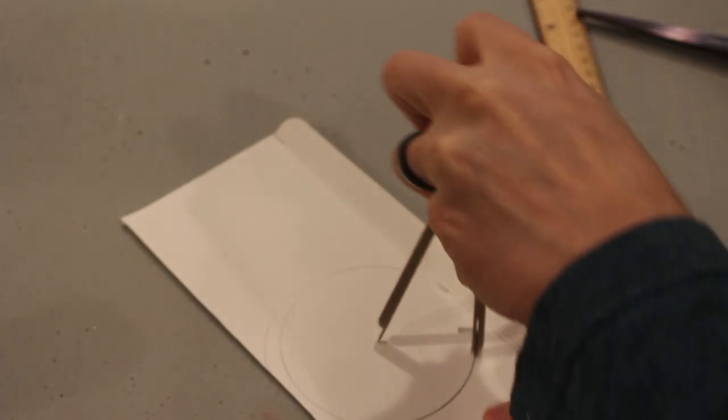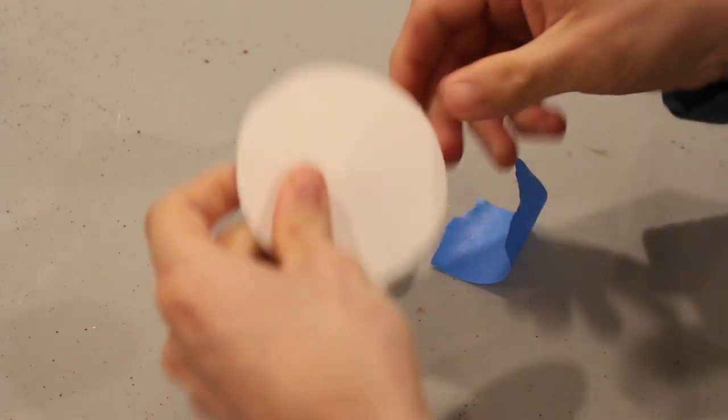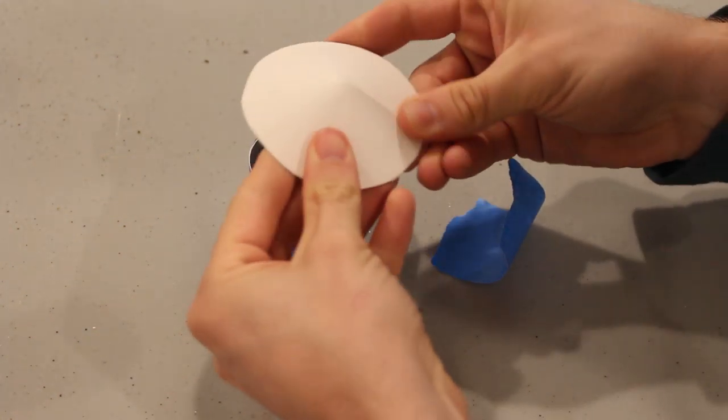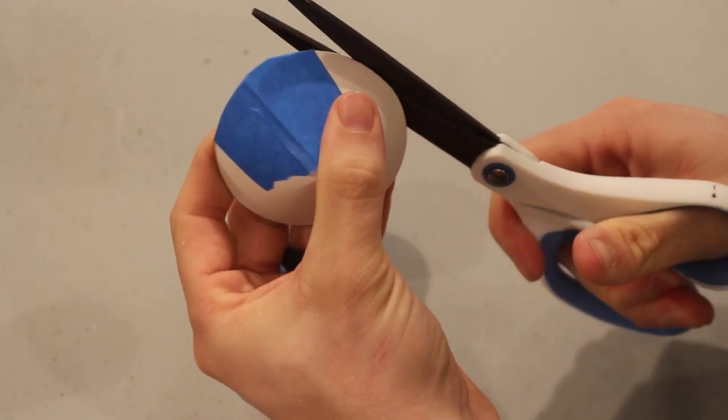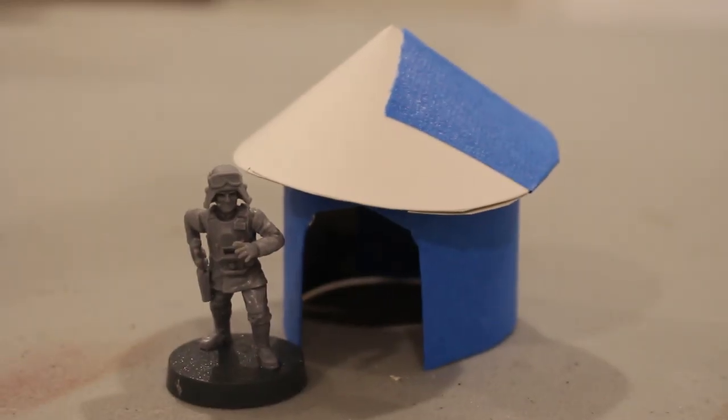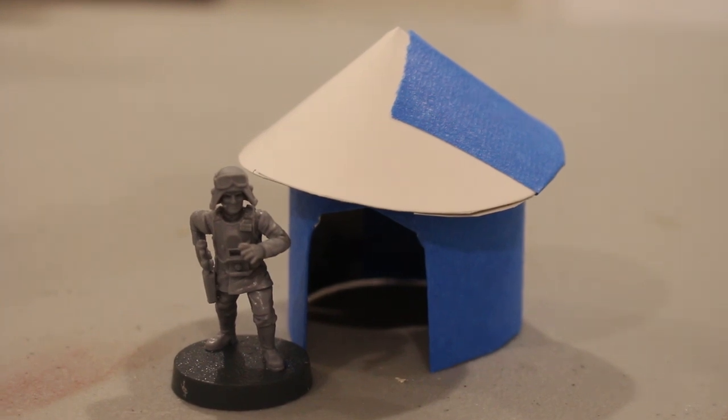For the roof cut out a three and a half inch circle, slit the radius with scissors and gently wrap it into whatever size cone looks and fits best on your hut. Tape the seam and trim any excess cardboard. You could leave the roof as removable but I like to secure mine in place with glue.